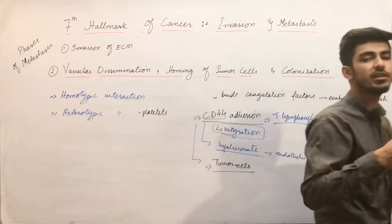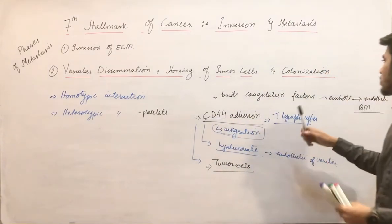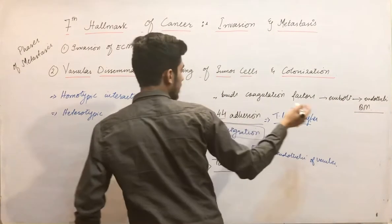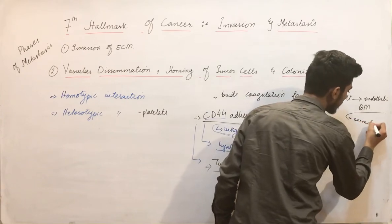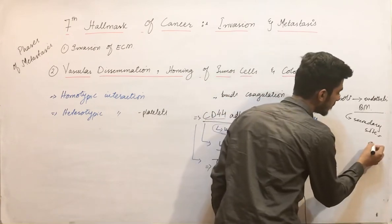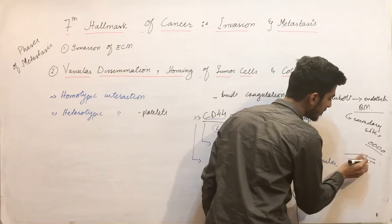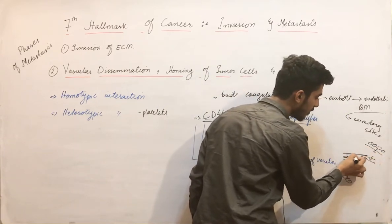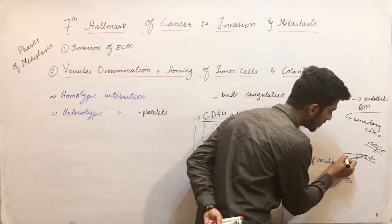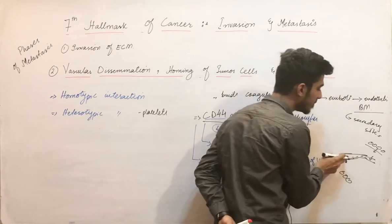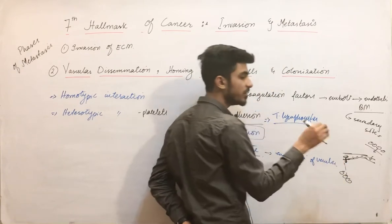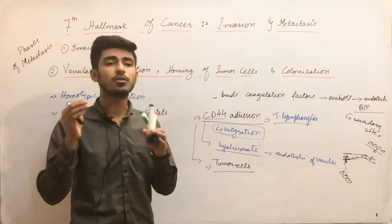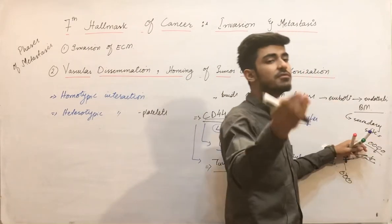The tumor cells invade the basement membrane at secondary sites. To explain this: the tumor cells separate, breach the basement membrane of the primary site, cross the interstitial connective tissue, breach the basement membrane of the vessel, and enter the circulation. The secondary deposit is dependent upon the anatomic site of the primary tumor and the vessel draining that primary tumor — wherever that vessel leads, that is where the secondary deposit will form.